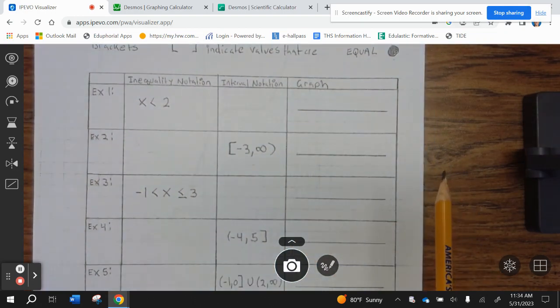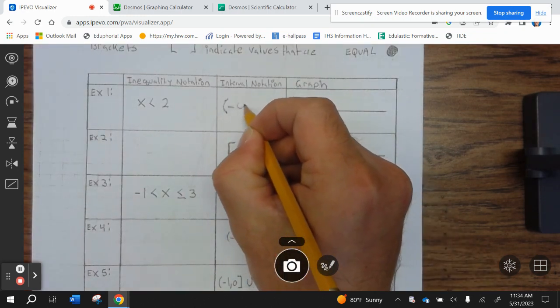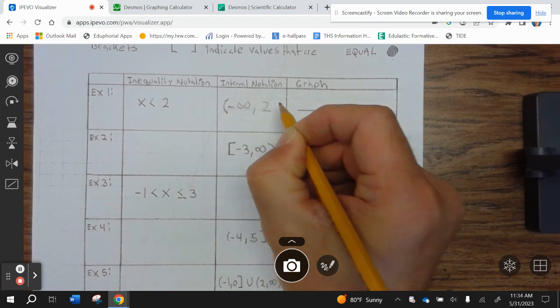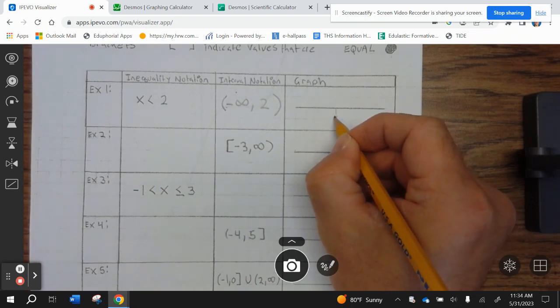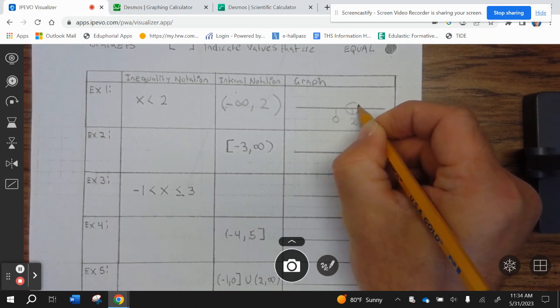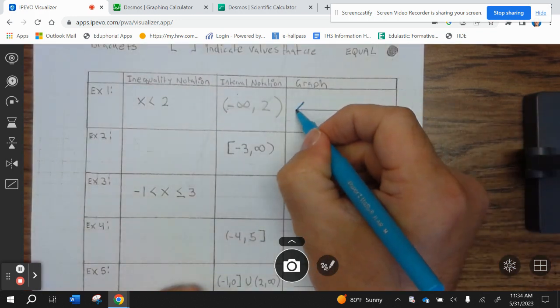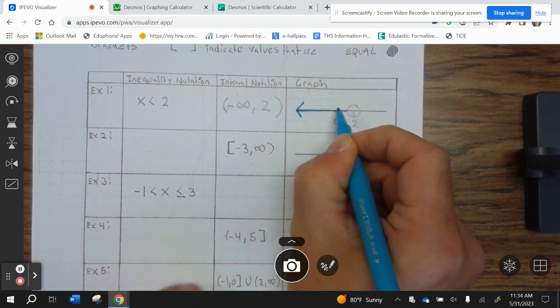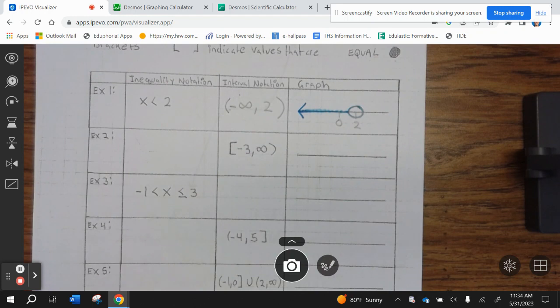Okay. So, inequality says X is less than 2. Interval notation would be from negative infinity to 2 parentheses. On a graph, you always want 0. So, 2 is right here. It's an open circle. And we're shading here.